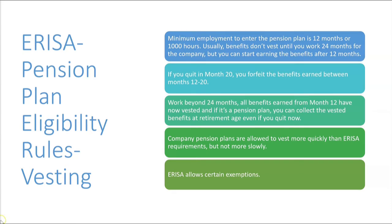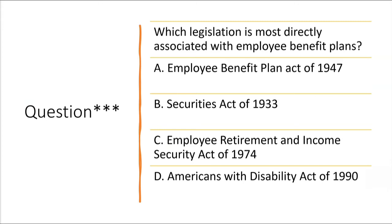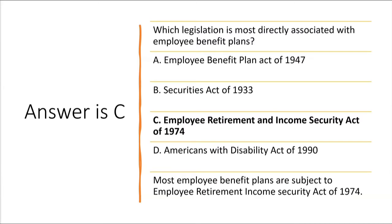Let's try a multiple choice question. Which legislation is most directly associated with employee benefit plans? The answer is the Employee Retirement Income Security Act of 1974 — ERISA. Letter C is the correct answer.